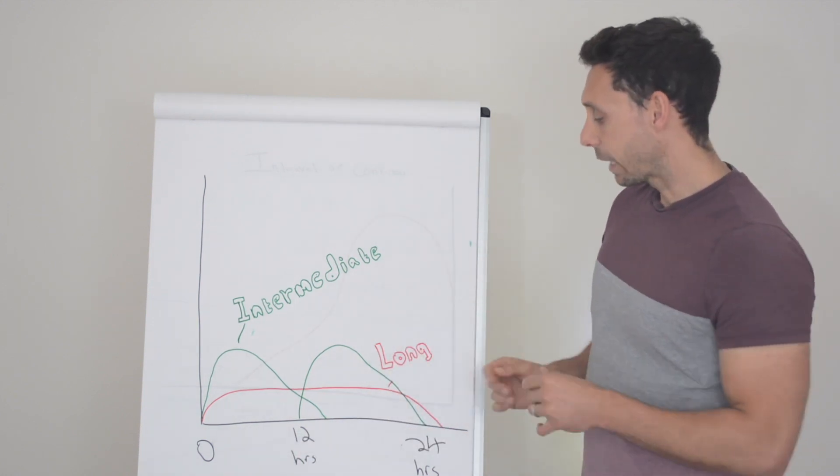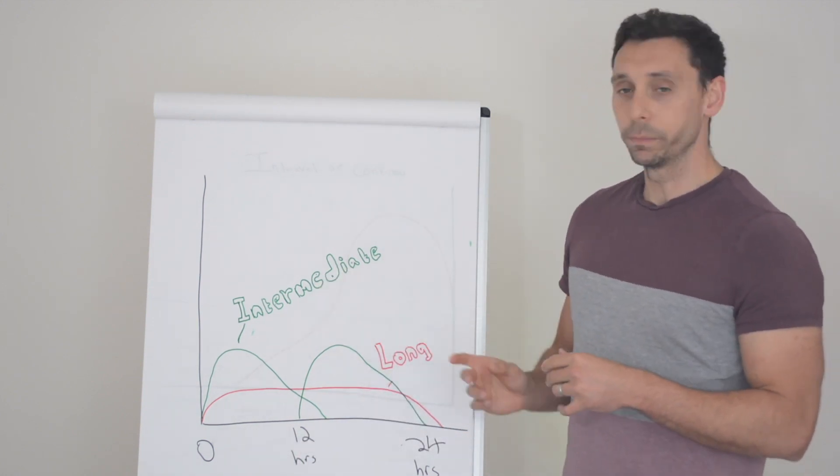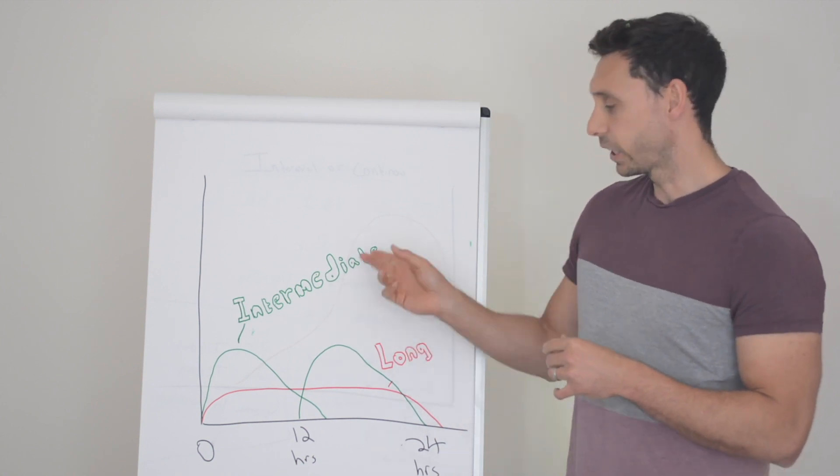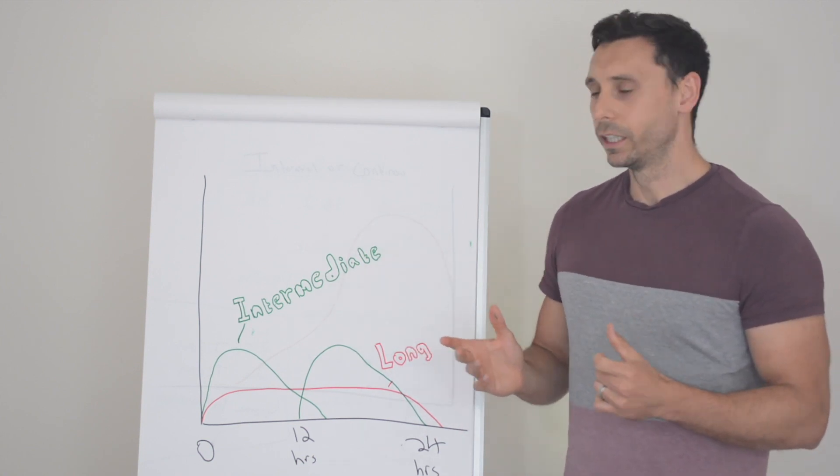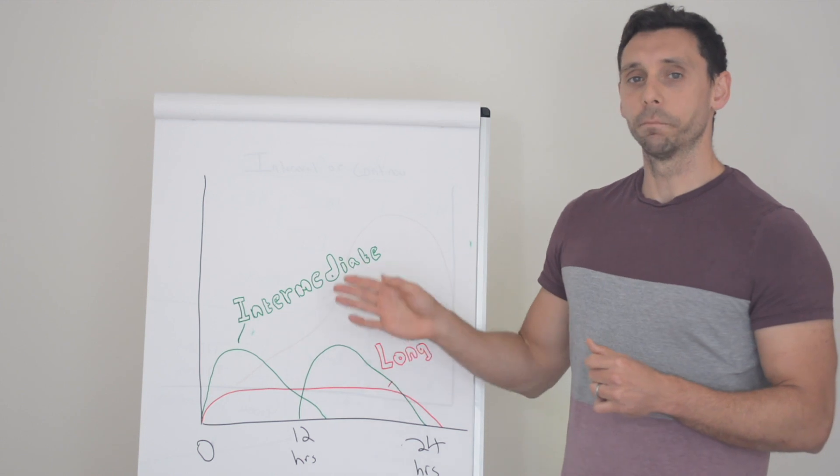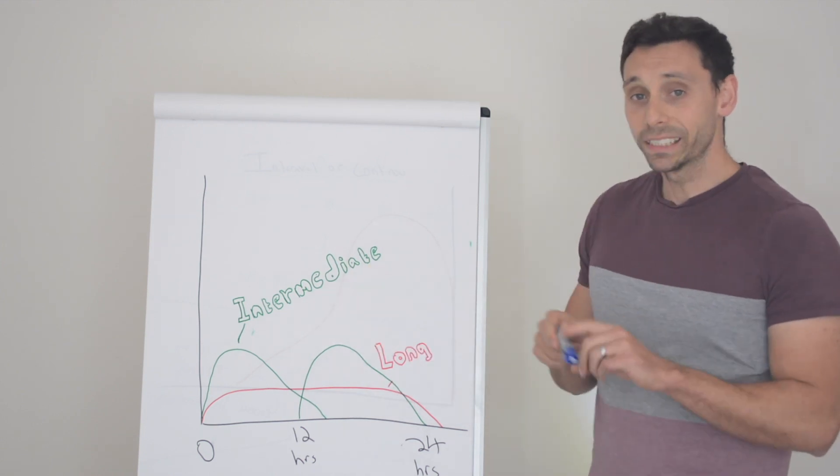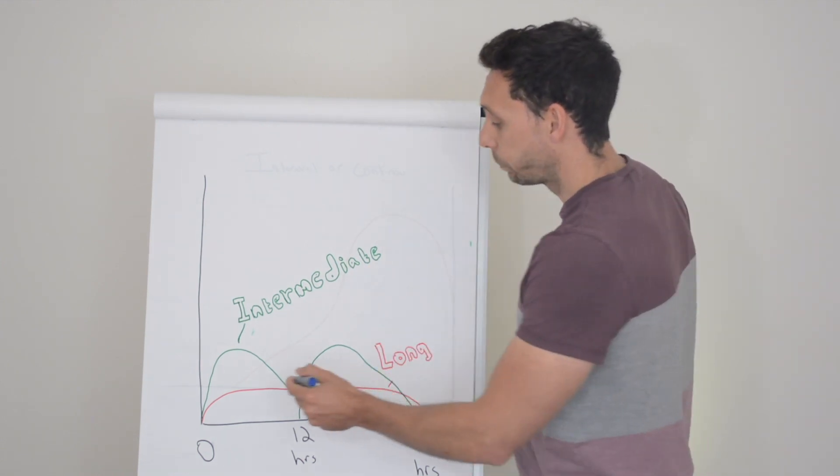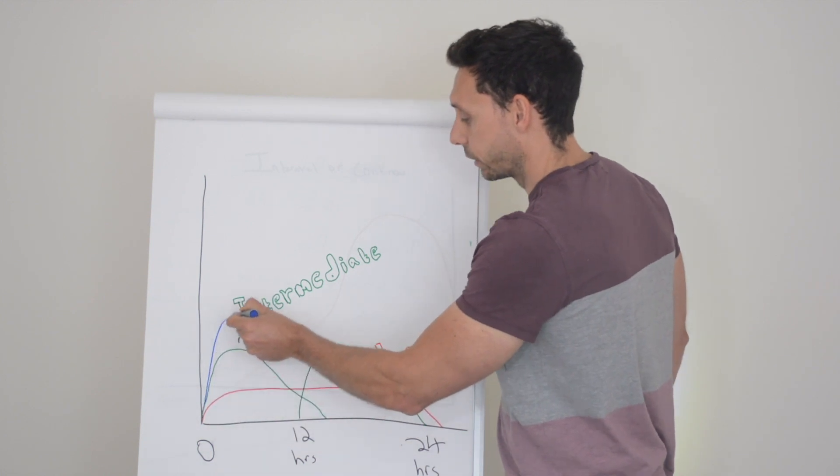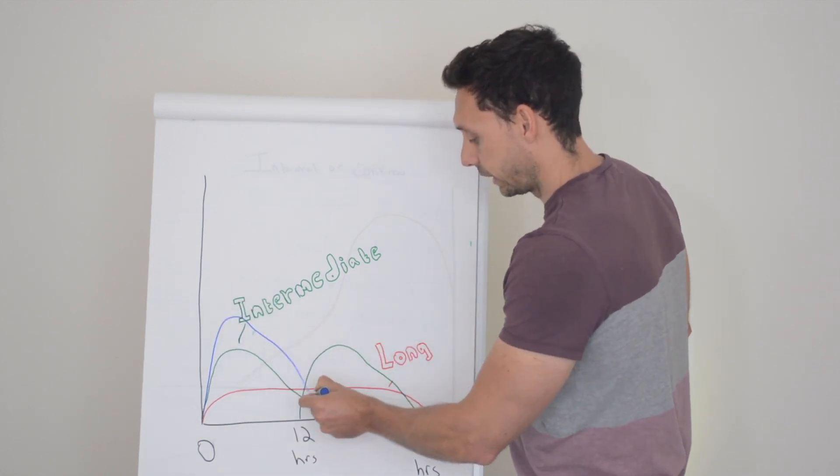We have the two comparisons here. We have long acting and we have intermediate acting insulin. You have to excuse the handwriting. Art was never my strong point, but let's just put this into perspective compared to a mixed insulin. So mixed insulins give you a much stronger peak because they have that rapid acting element. But then they also have that intermediate acting part.